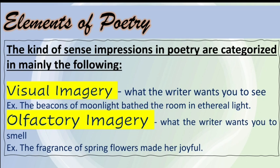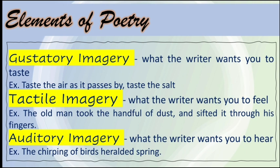Let's get to know the kinds of sense impressions in poetry. Number one is visual imagery — it is what the writer wants you to see. Example: 'The beacons of moonlight bathed the room in ethereal light.' The author describes it carefully so that you can imagine the scenario. Next is olfactory imagery — it is what the writer wants you to smell. Example: 'The fragrance of spring flowers made her joyful.' The author uses the fragrance of a thing to describe emotion. Next is gustatory imagery — it is what the writer wants you to taste. Example: 'Taste the air as it passes by. Taste the salt.' The author tells us the taste of something by comparing it to a common taste.